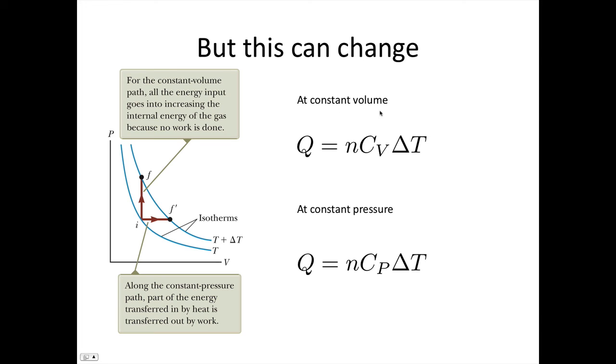So at constant volume, we write the heat added is equal to nCV delta T. So this is the molar specific heat at constant volume. And at constant pressure, we write Q is equal to nCP delta T. The constant volume case is when we're going from I to F. In that case, the volume here is not changing. The constant pressure case is when we're going from I to F dash. In that case, the pressure here is not changing.